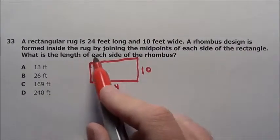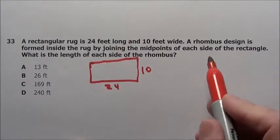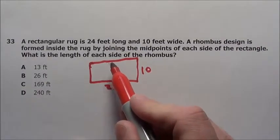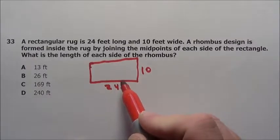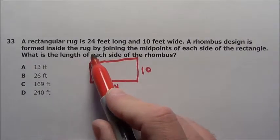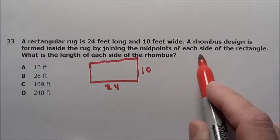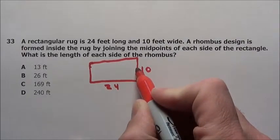A rhombus design is formed inside the rug. Now what is a rhombus? A rhombus is basically all sides have to be the same length. So a rhombus is formed inside the rug by joining the midpoints of each side of the rectangle.